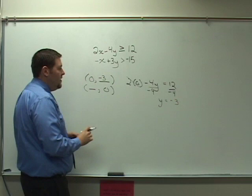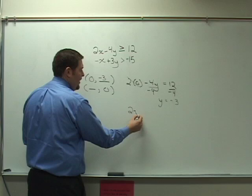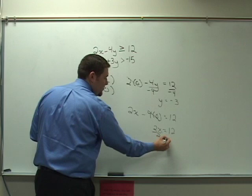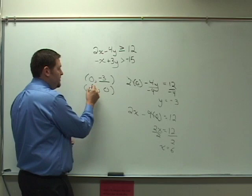Then do the same information with the second one, now y is equal to zero. 2x minus 4 times zero equals 12, this goes to zero, I have 2x equals 12, divide both sides by 2, and get out that x is equal to 6. Fill that information here.